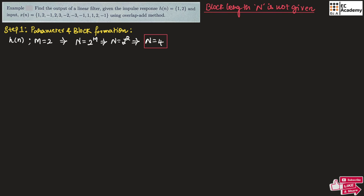Now let us find the value of L using the formula N = M + L − 1. Since we know M and N, we get 4 = 2 + L − 1, so L = 3. This means from the given input we take three values to form one block, and the length of that block must be equal to 4.